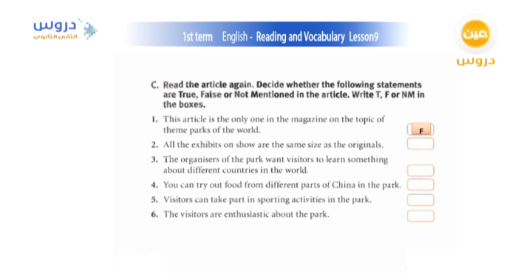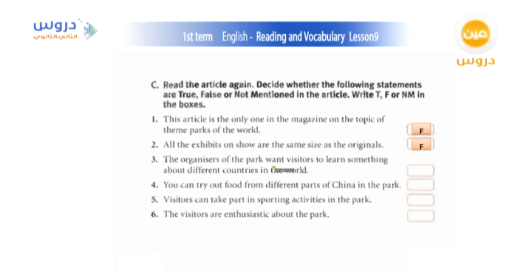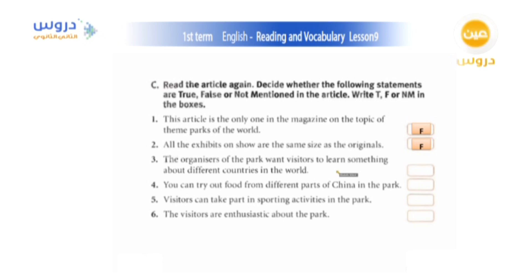Statement three: 'The organizers of the park want visitors to learn something about different countries in the world.' Lina, Nora, Sarah, Sham, Wafa, Sarah Kahtani — everyone says true, and that's very easy since I helped you with this. It was not only about places — it was also about how people live and eat. Statement four: 'You can try out food from different parts of China in the park.' Not mentioned — they talked about food from around the world in general, not specifically Chinese food. That answer is not mentioned.